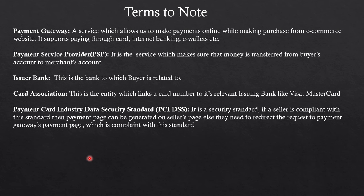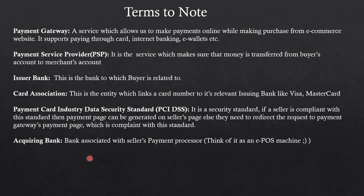E-commerce sites like Amazon and Flipkart are also compliant with PCI DSS, which is why they can save your card on their website so you don't have to enter details every time. The acquiring bank is the bank associated with the seller side — think of it like an EPOS machine issued by a bank to the seller, which is the equivalent on the online side.